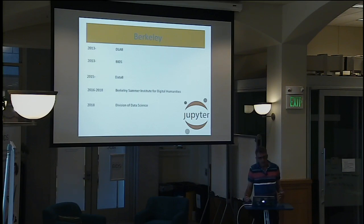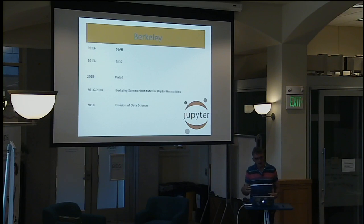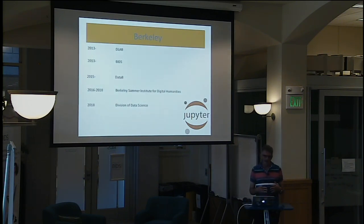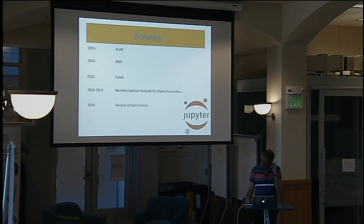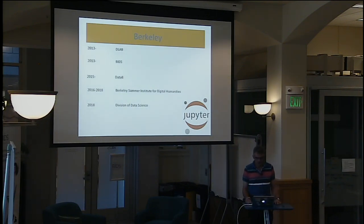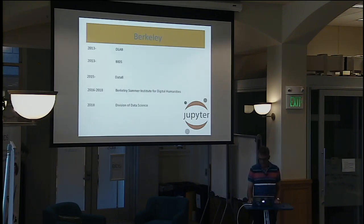So two developments: one on the Assyriology side to digitize their data, and the other on the data science side to make data science more accessible. At the intersection of those two developments — that is where I want to place COMPASS, Computational Assyriology, as my project. What is the potential of such a project? What kinds of things can we do with the digitized data and the tools from data science?